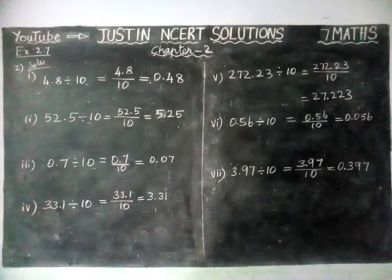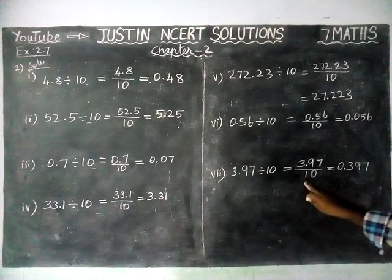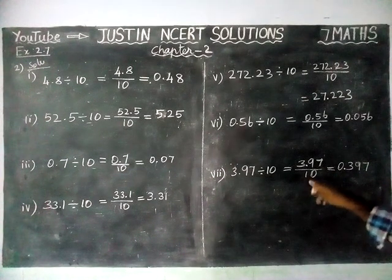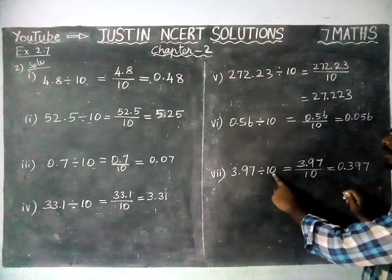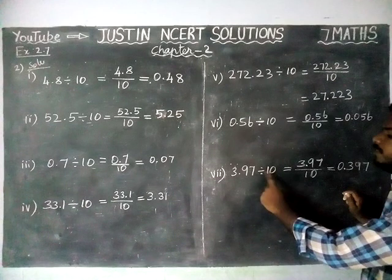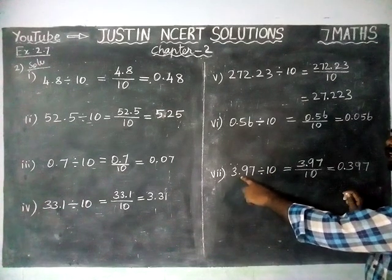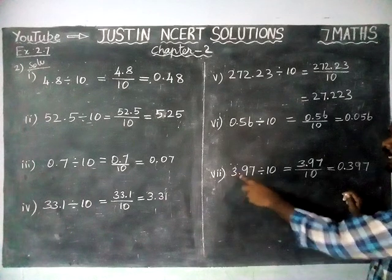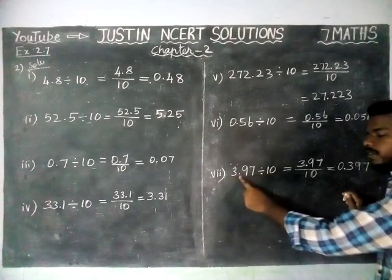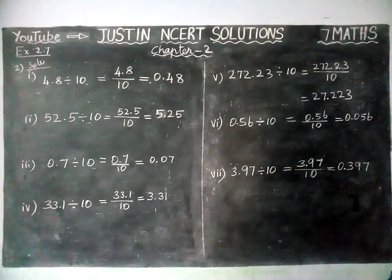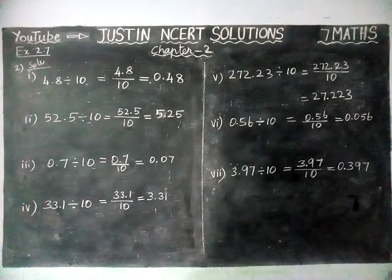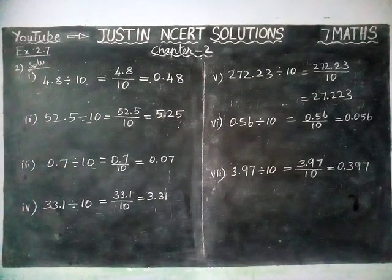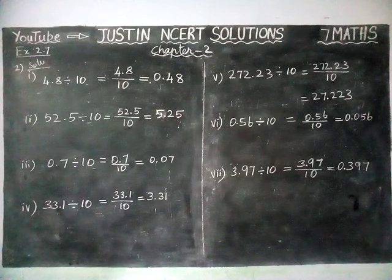Okay, listen students, I am repeating again. When we are dividing by 10 or 100 or 1000, according to the number of zeros, we have to move left hand side that many digits. If it is one zero, one step left hand side. If we have two zeros, two steps left hand side. That's all students — kindly give your suggestions in the comments box, subscribe to the channel, thank you, and share it with your friends.